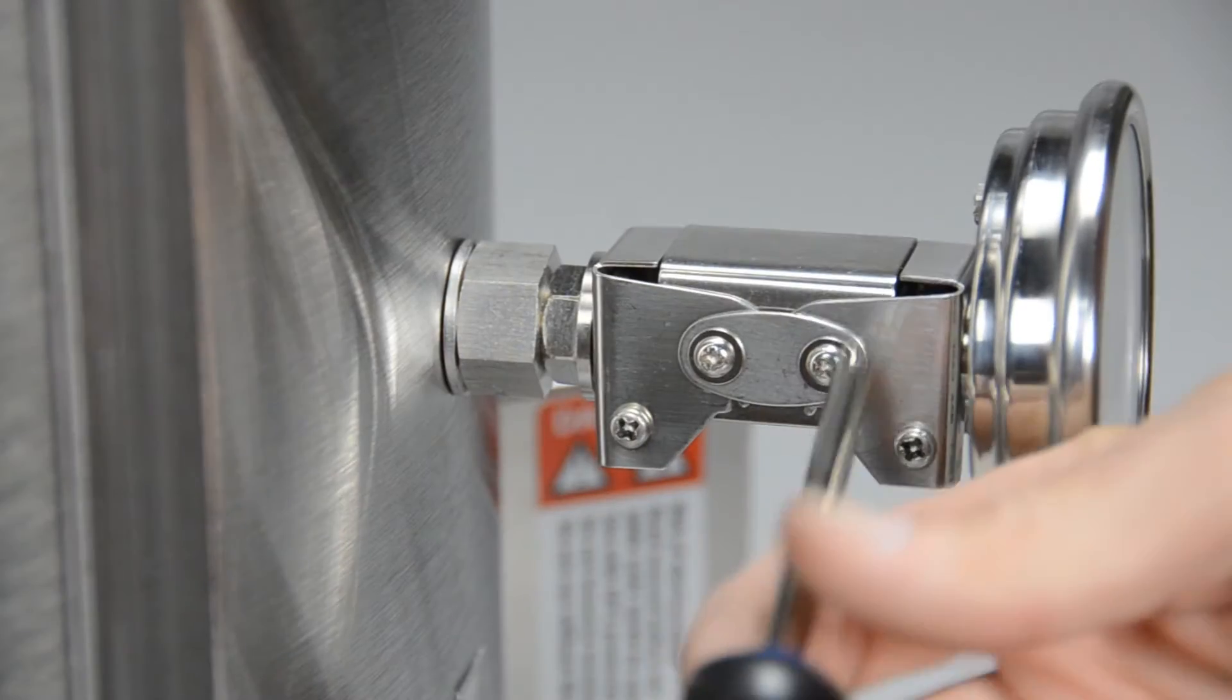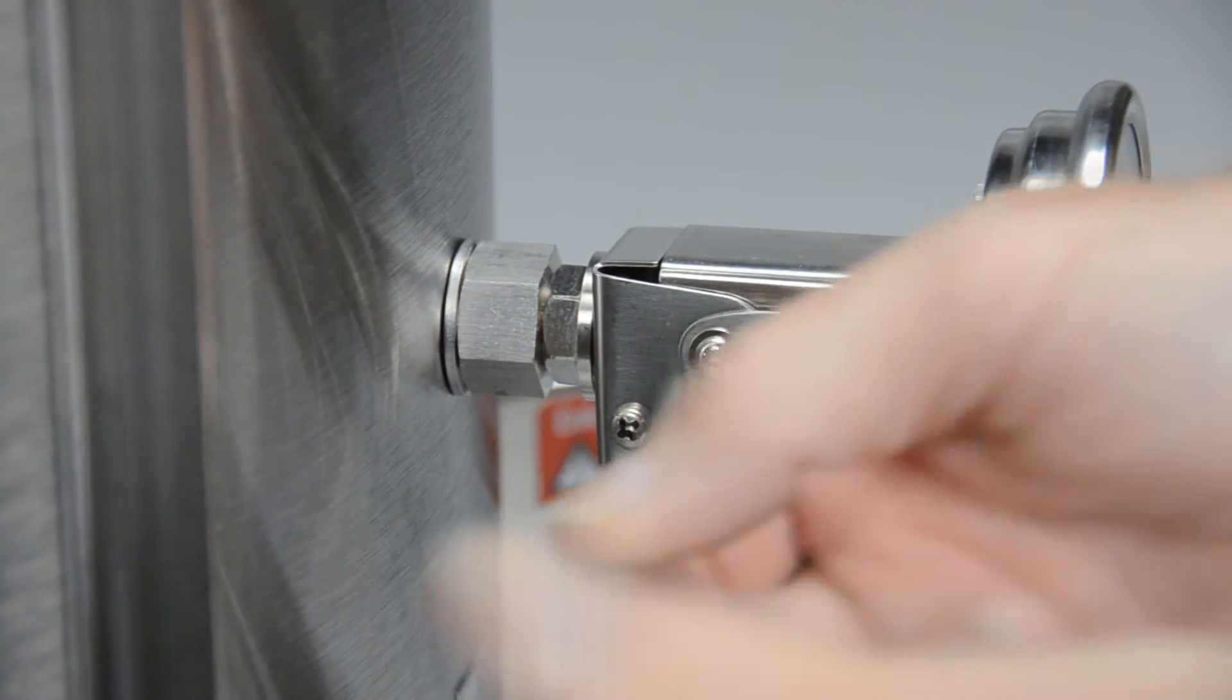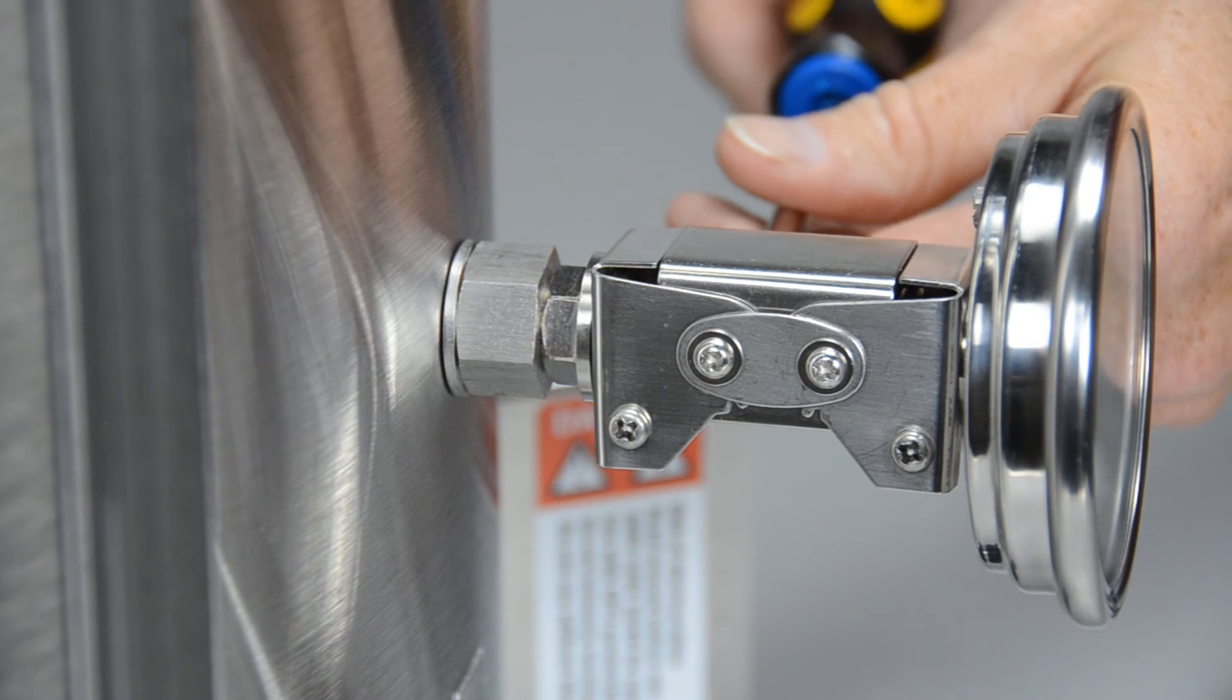Step 4. If the pivot mechanism is too stiff to easily move by hand, loosen the screws on the pivoting mechanism slightly to allow for the proper motion.